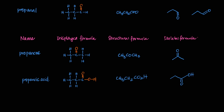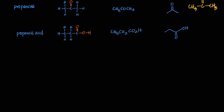In the exam they may specify: draw the displayed formula — so you draw every bond; draw the structural formula — the condensed version; or draw the skeletal formula. Sometimes they just say 'give structures,' in which case you can mix and match. For example, for a ketone you might write CH₃ bonded to C=O bonded to CH₃ — a hybrid approach grouping alkyl groups as CH₃ while explicitly showing the double bond. This flexibility is helpful in exams.